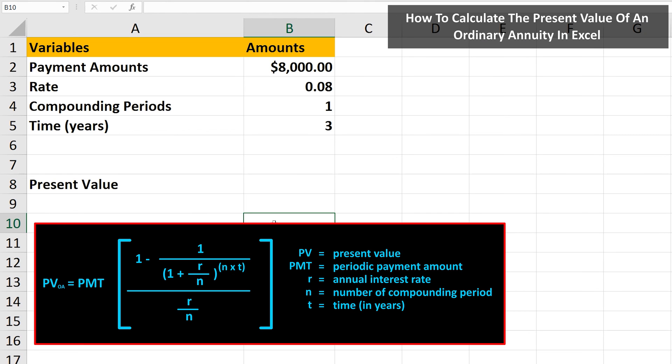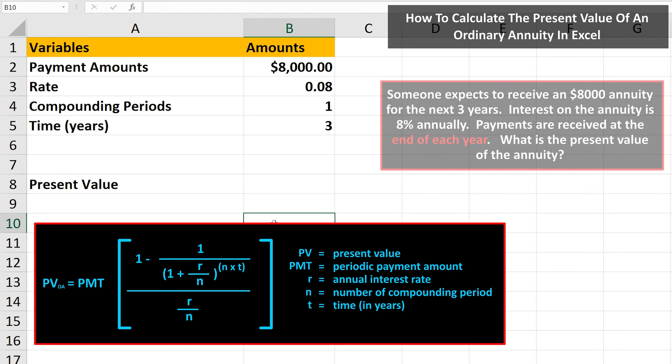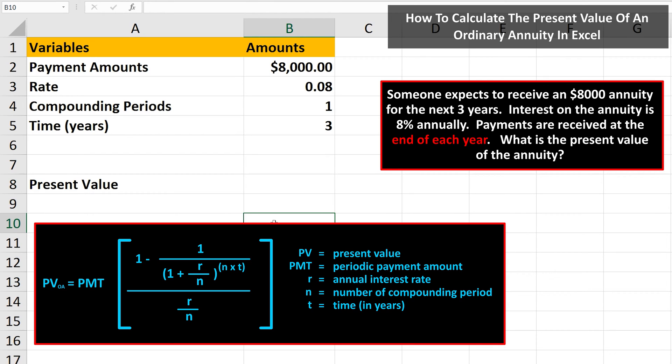Here is the formula to calculate the present value of an ordinary annuity with all of the variables listed. We're going to go through how to input this formula into Excel. As an example, let's say that someone expects to receive an $8,000 annuity for the next three years. Interest is 8% annually, and the payments are received at the end of the year, so this is an ordinary annuity. What is the present value of the annuity?